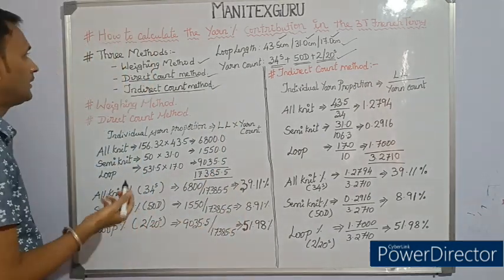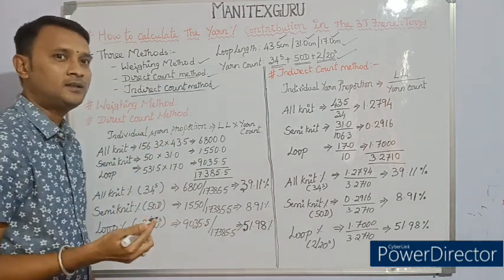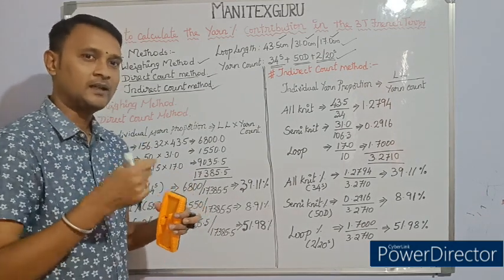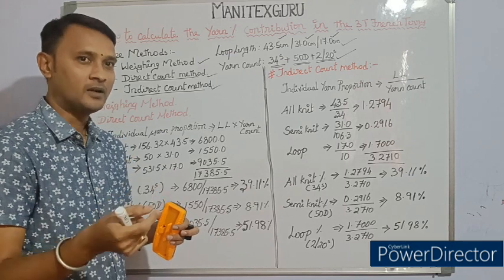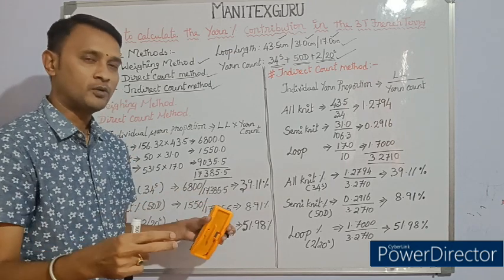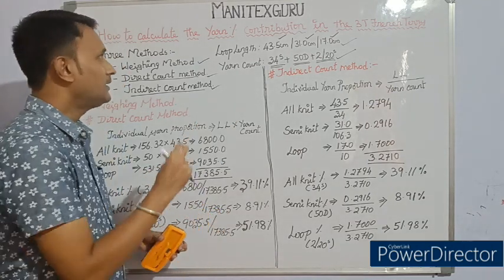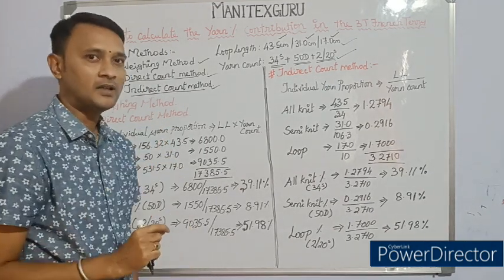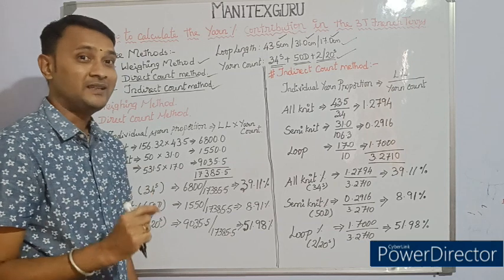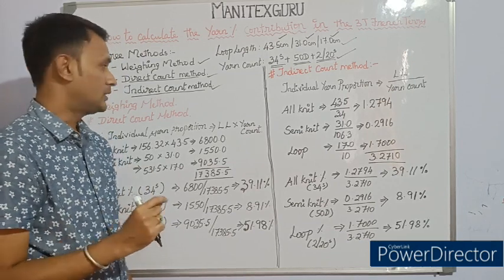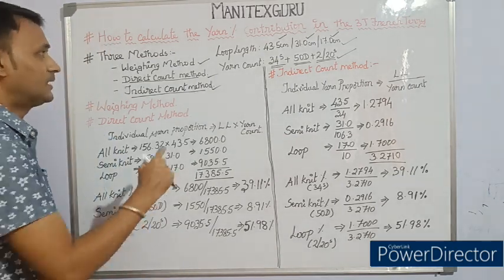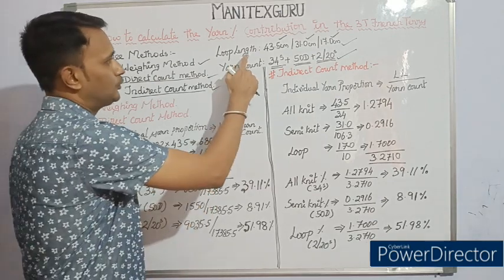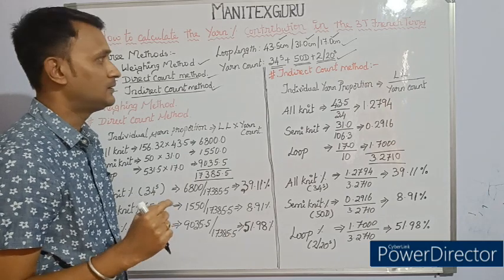Just with these two knit parameters we can calculate the yarn percentage in a three-thread French terry or fleece fabric. The weighing method, which is the most commonly used method, requires the physical swatch. The initial weight of the swatch is noted, then we unravel the all-knit, semi-knit, and looper yarns. The individual weight proportion divided by the total weight gives the yarn percentage contribution — a very time-consuming method requiring the physical swatch.